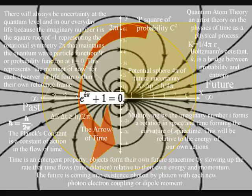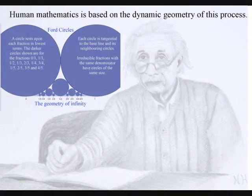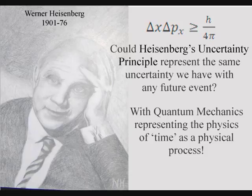Or probability function, at t equals zero. This represents the probability and uncertainty of everyday life, that at the smallest scale of this process, is represented mathematically by Heisenberg's uncertainty principle of quantum mechanics.